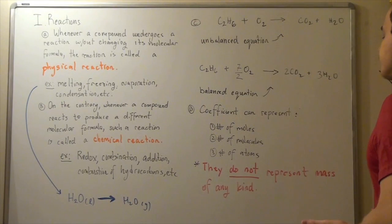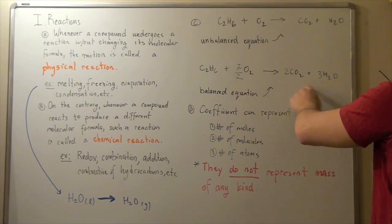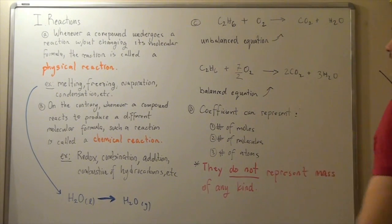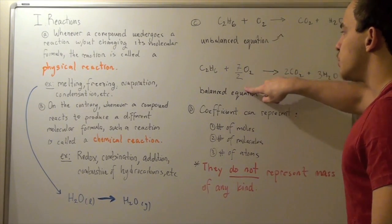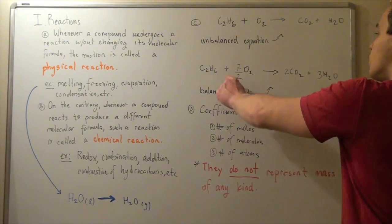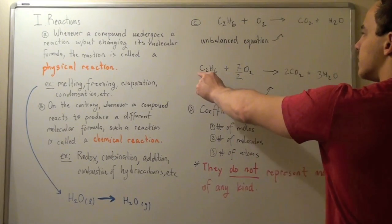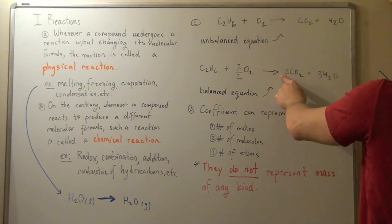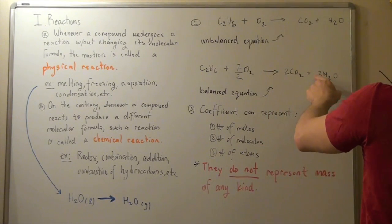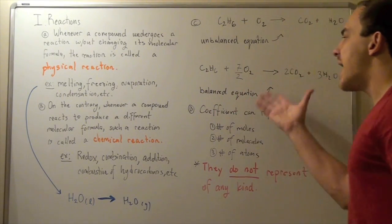Finally, let's balance the oxygen. We have two times two oxygen — so four oxygen — from CO2, and three times one — three oxygens — from H2O, for a total of seven oxygens on the right side. That means we have to multiply the O2 by seven over two, because seven over two times two equals seven oxygen molecules on the left side. So we put in two carbons, six H's, and seven O's, and we get back two carbons, six H's, and seven O's. This type of reaction is called a balanced equation.